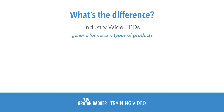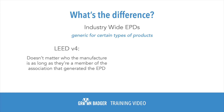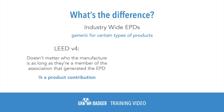What's the difference, you may ask? Industry-wide EPDs are generic for certain product types, such as Type X gypsum board or concrete. For version 4, it doesn't really matter who the manufacturer is as long as they are a member of the association that generated the EPD. As you can see here, this EPD is from the U.S. Gypsum Association, and anyone from North America who is a member can claim this for their product. Industry-wide EPDs are only worth a half product contribution under version 4.